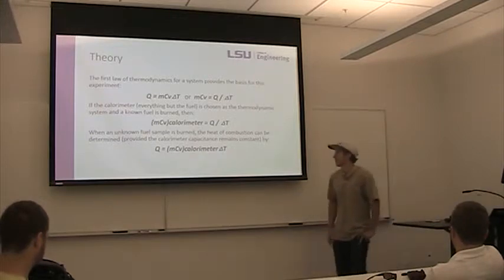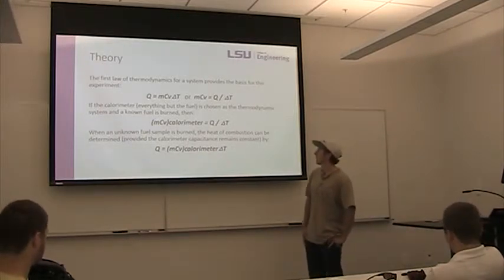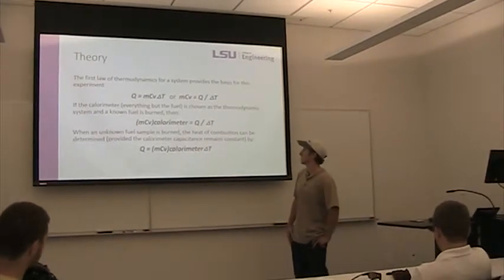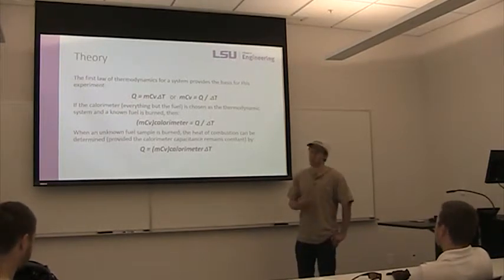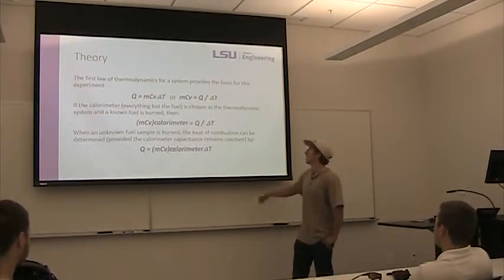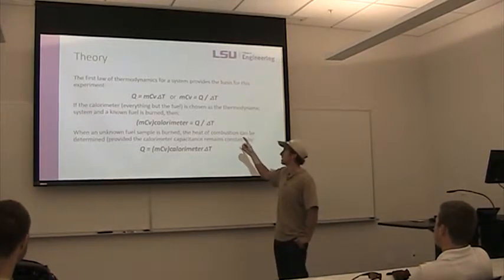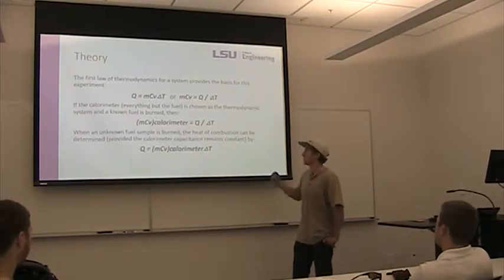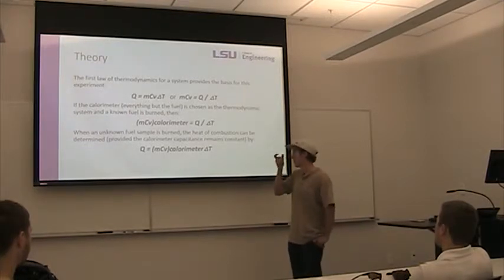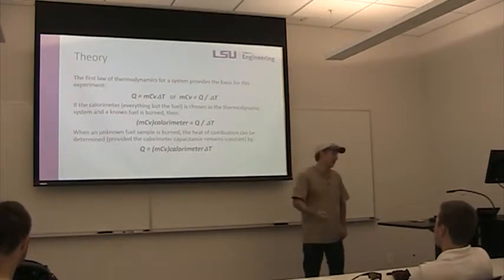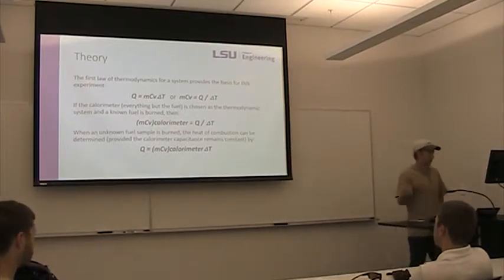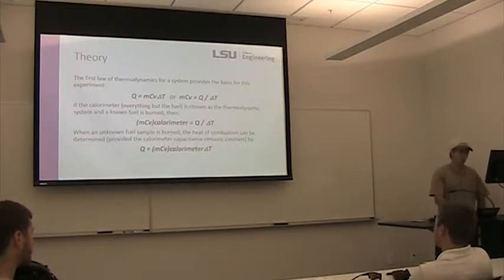These will be the equations we used. Essentially, to start, we already know the Q value for the benzoic acid tablet. So we used the measured change in temperature and the already known Q value to determine the thermal capacitance of the calorimeter. Then, moving to the next part of the experiment, we can determine the total heat release of our sample, which was a gummy.